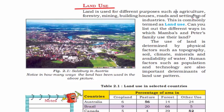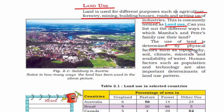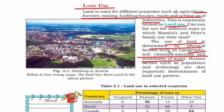We use land for agriculture, forest, mining, building houses, roads, and setting up various industries. The use of land is determined by physical factors such as topography, soil, climate, minerals, and availability of water. Even if you want to run a business, these factors are very important — if there is no water, you cannot run a factory; if the climate is not good, you cannot grow a particular crop. Soil is also crucial if you are in the agriculture business.